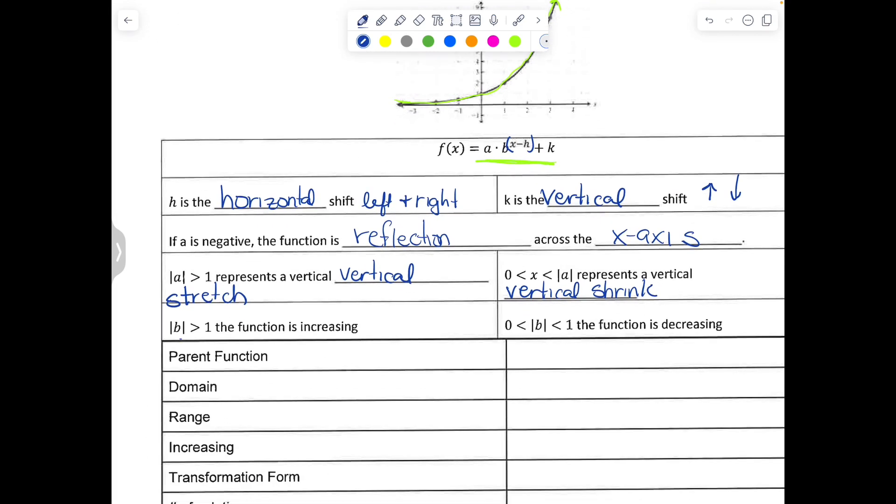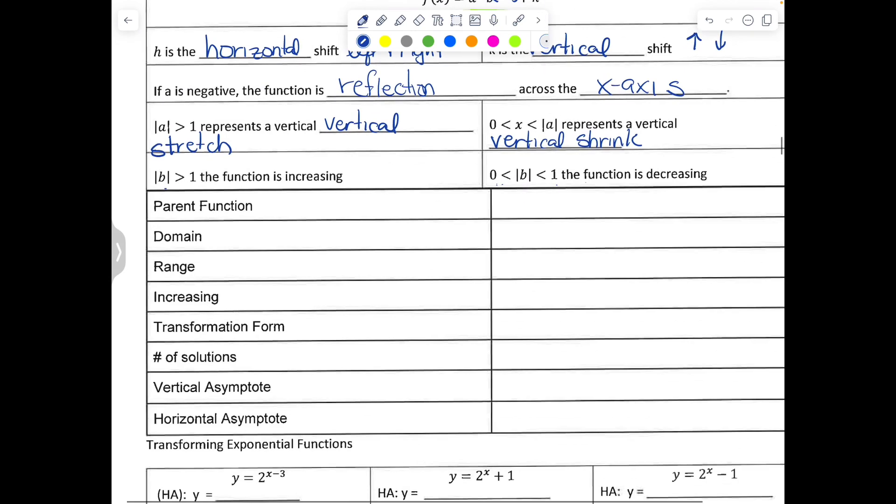And if b, the base, is greater than 1, the function is increasing. If b, the base—b has to be positive—and if it's between 0 and 1, you'll see that the function is decreasing. So let's talk about the parent function, some characteristics of the parent function.